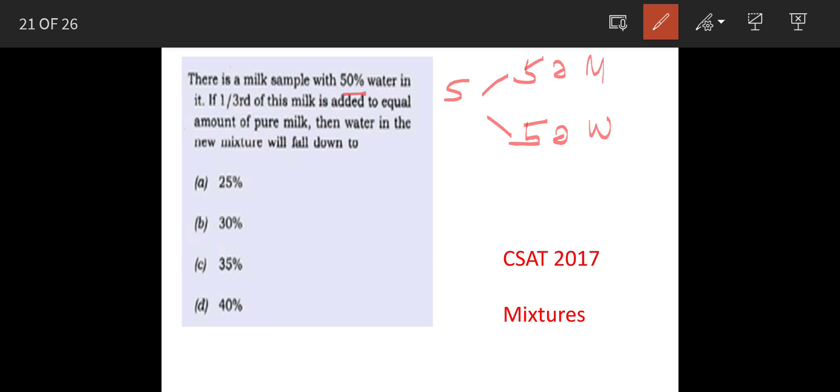One third of this milk was taken out and this was added with equal quantity of pure milk. That means one third quantity of pure milk was added to this mixture. What is the quantity of water in the new mixture? That is the question.